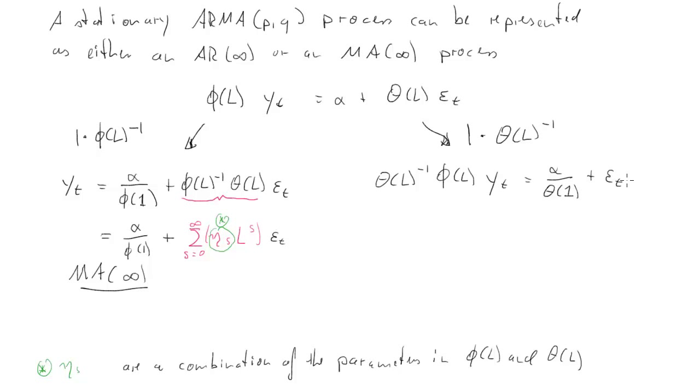Again, we have on the left-hand side a product of two lag polynomials, of the inverse of one lag polynomial times another lag polynomial. This is just the sum of many coefficients, here we call them psi_s times L to the power of s times y_t. What we have here on the left-hand side is y_t minus psi_1 times y_t minus 1 plus psi_2 times y_t minus 2 and so forth, and these psi_s's are a combination of the parameters in our two original lag polynomials, phi(L) and theta(L).